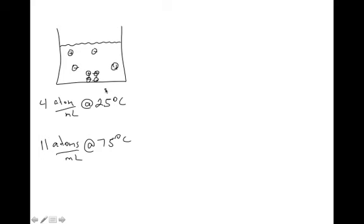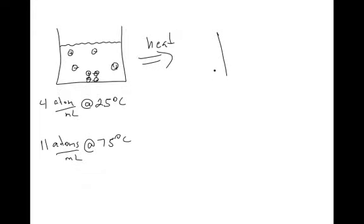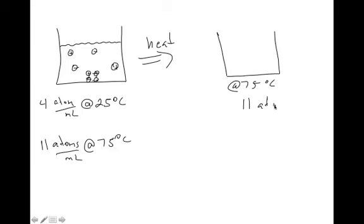So let's take this beaker and heat it to 75 degrees Celsius. At 75 degrees Celsius, we can dissolve 11 atoms. How many atoms are in this beaker? If you can count, there are 8 atoms in that beaker.